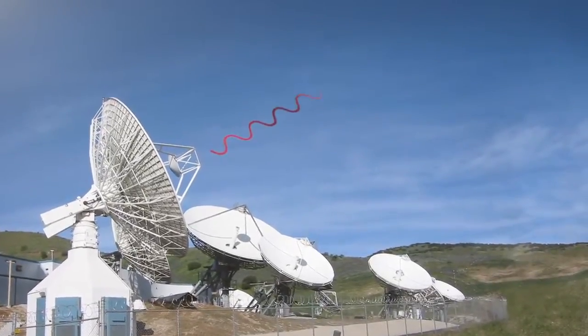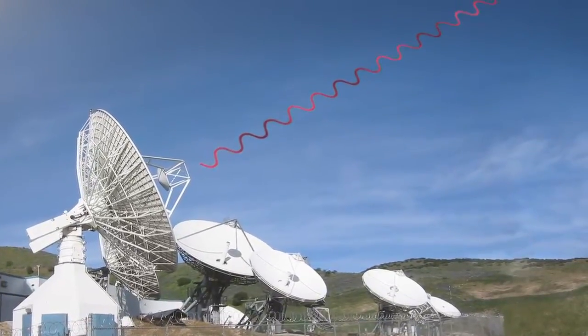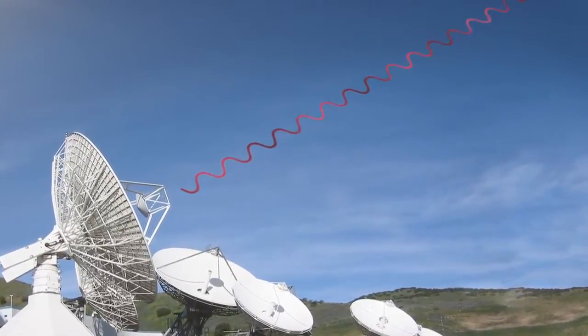With just a transmitter and a satellite dish, an adversary anywhere in the footprint can jam a satellite signal.